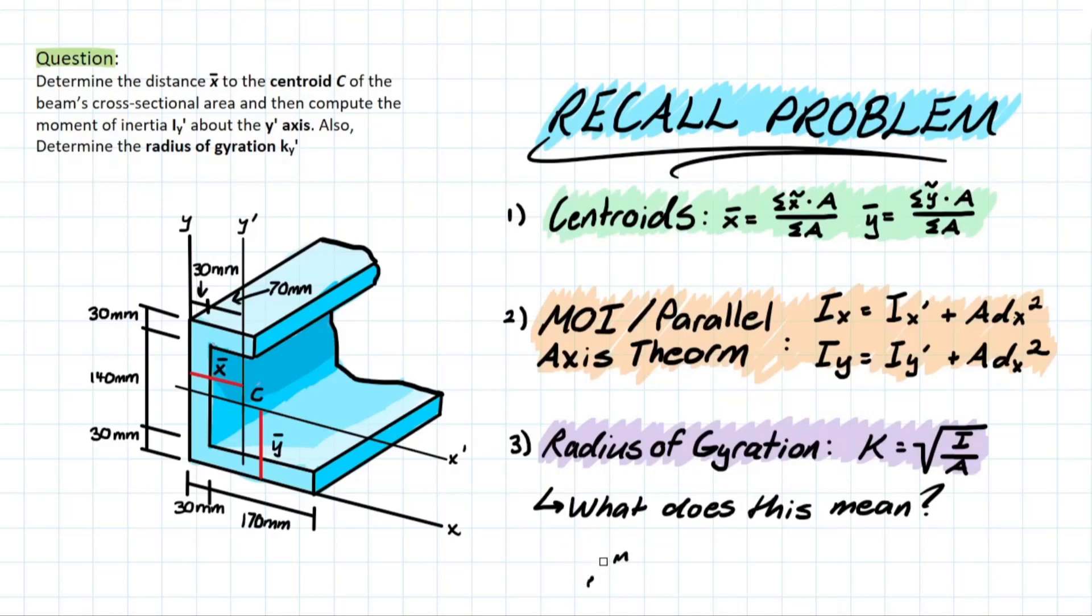However, in strength of materials, we're dealing with a slightly different formula, where this formula is more of a measure used later on, so that we can get an idea of a column's tendency to buckle.